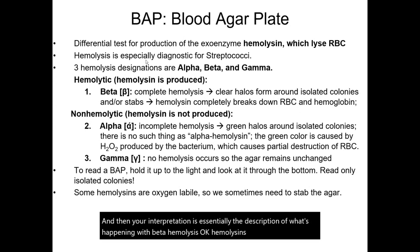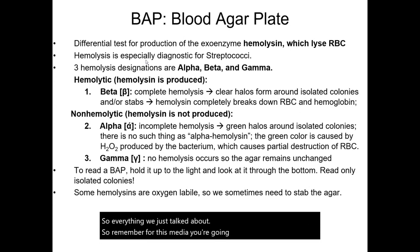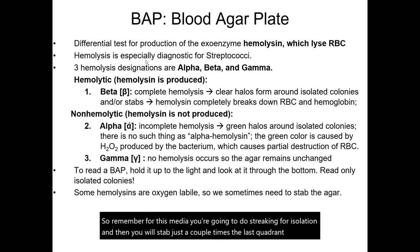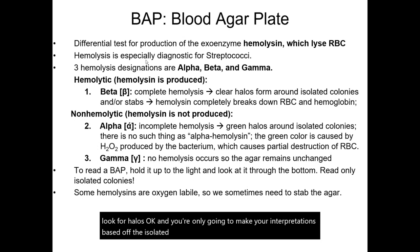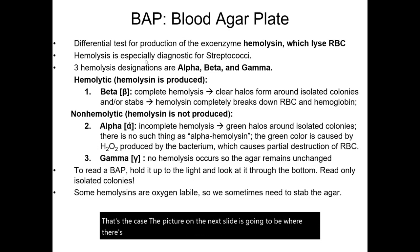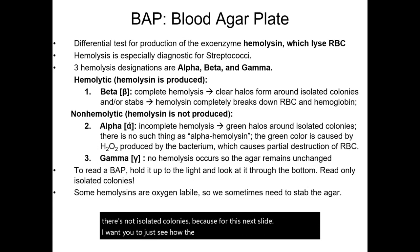Remember, for this media, you're going to do streaking for isolation and then stab the last quadrant a couple of times in case you have any oxygen-labile hemolysins. When you take this media out of the incubator, hold it up to the light to look for halos, and make your interpretations based only on the isolated colonies. The next picture shows three outcomes on one plate — beta, alpha, and gamma — so you can see how the media changes for each.